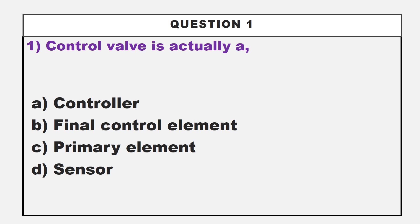The answer is option B, final control element. Control valve is not a controller, because it receives signal from the controller and provides the final control action. So control valve is actually a final control element.